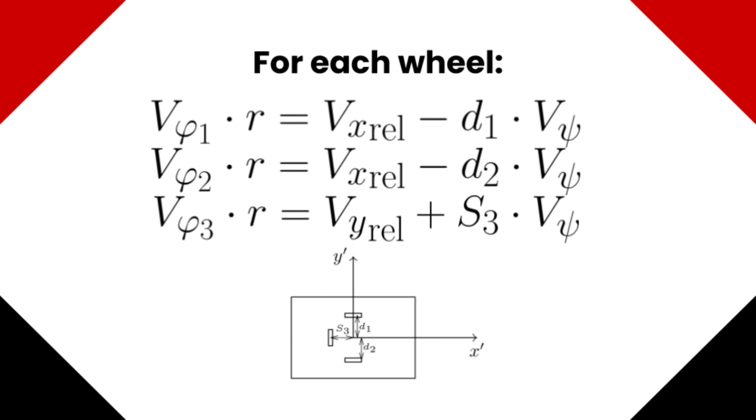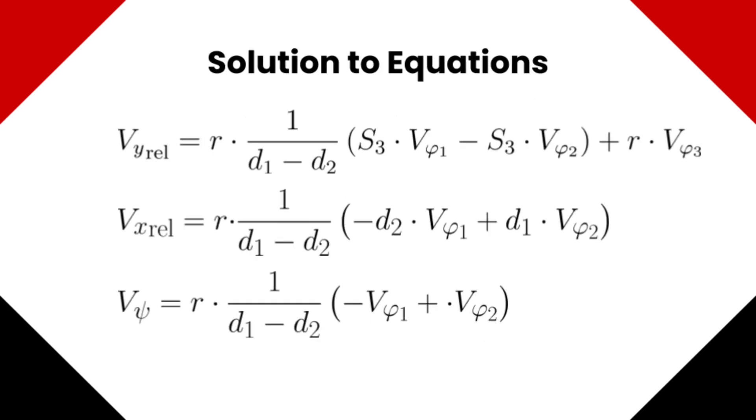To save time, we will show the solution to the system of equations, but it is highly recommended that you try to solve it on your own. All the work required to solve this equation is not shown, but it just uses simple algebra. These formulas tell us the relative velocity of the robot in x, y, and angular coordinates is based on the speeds of the three odometry wheels.